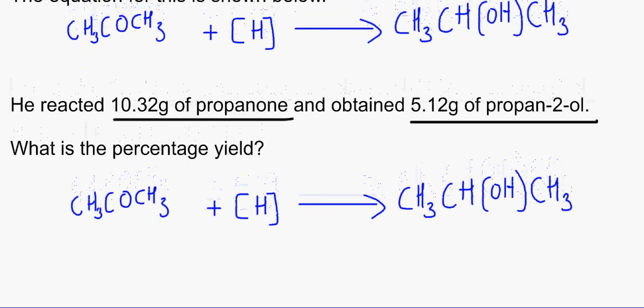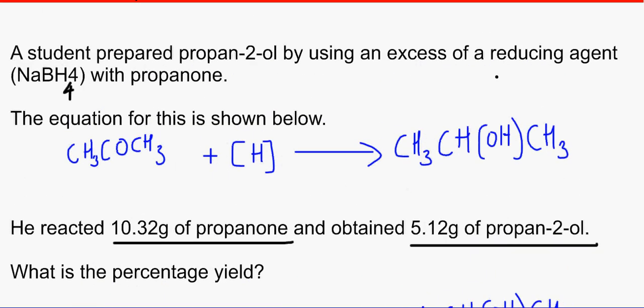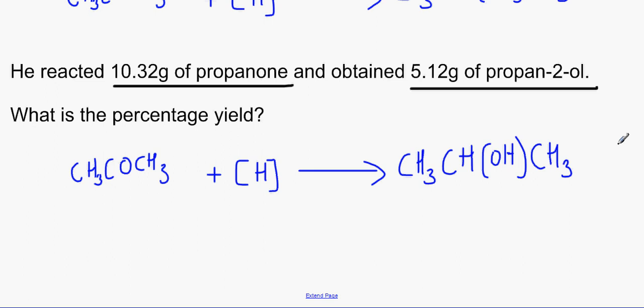We need to calculate the percentage yield. How would we do that? Well, the first thing I always do is to label everything and write it down in a framework. So we know what the mass is for propanone, and that is 10.32 grams.